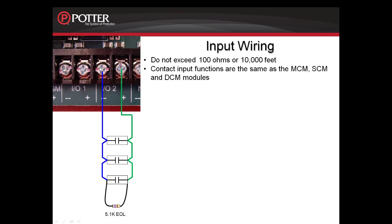When wiring either the I/O circuits on the PSN-1000 smart power supply or an I/O circuit as an input on the fire alarm control panels, those circuits cannot exceed 100 ohms or 10,000 feet. They need an end-of-line resistor of 5.1k ohms. The contact input functions of these circuits are the same as they are for the MCM, SCM, and DCM modules that can be installed on the SLC circuit in the field.